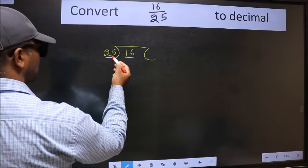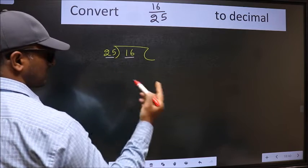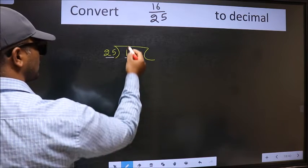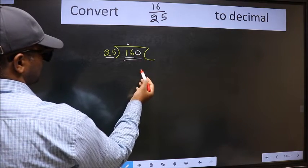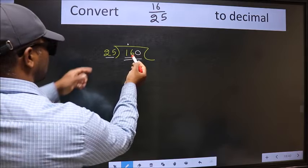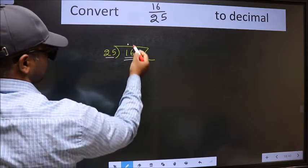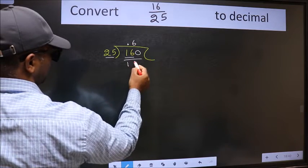16 is smaller than 25. So what we should do is put a dot and take 0. So, 160. A number close to 160 in the 25 table is 25 times 6, 150.